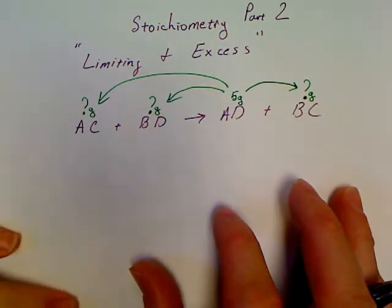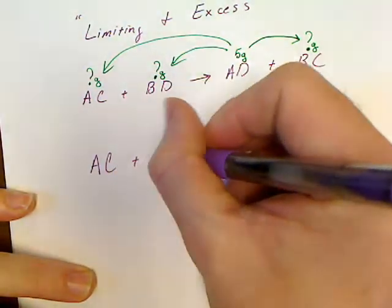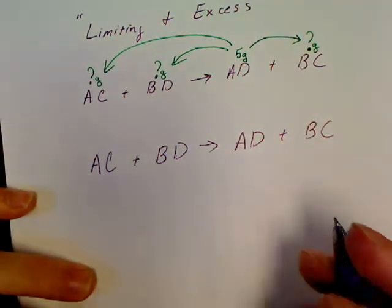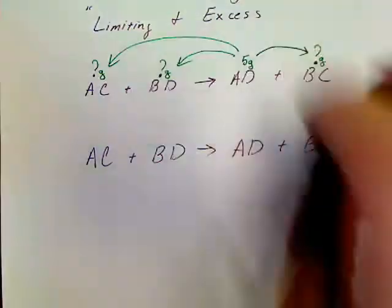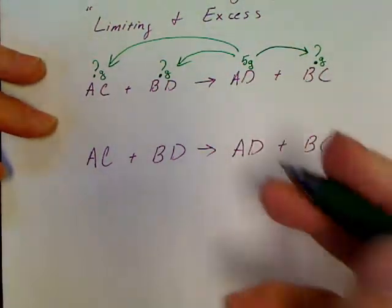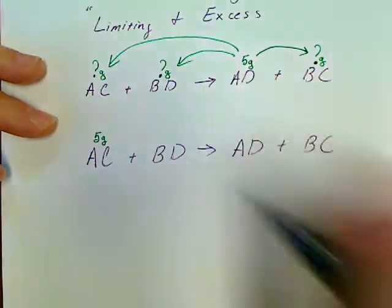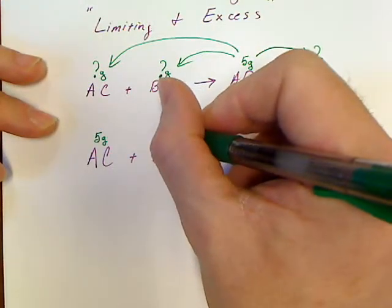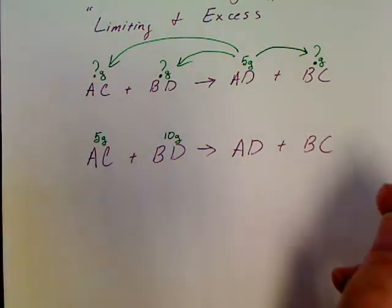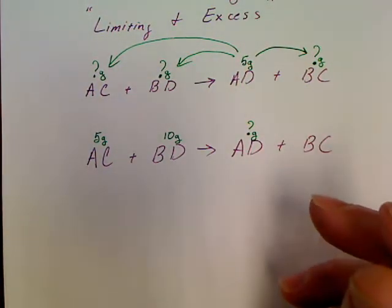So what we're going to do today is go back, and we can take a look at this generic equation. What happens if you start to do a problem, instead of just being so kind and giving you one number, what if they gave you five grams of AC, and they're giving you ten grams of BD. These guys are too considerate. And then they ask, how many grams of AD are made? So that's your basic looking question.